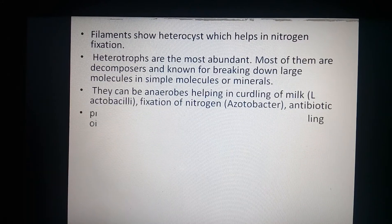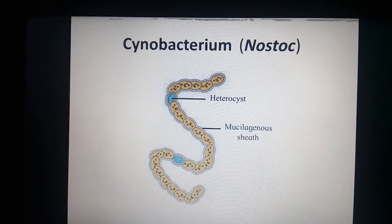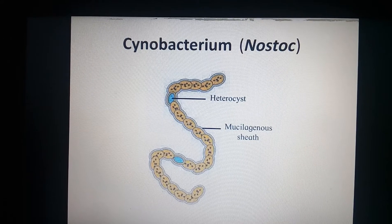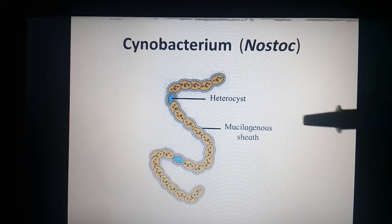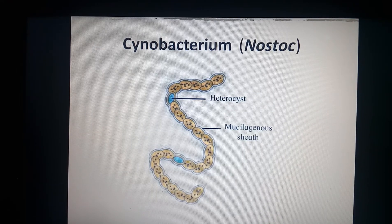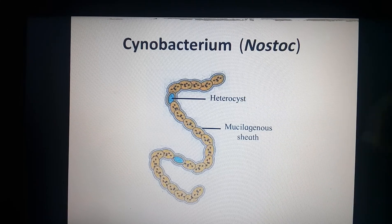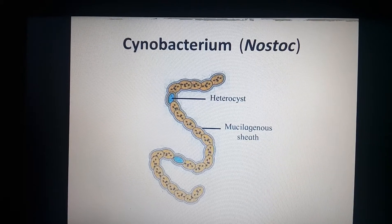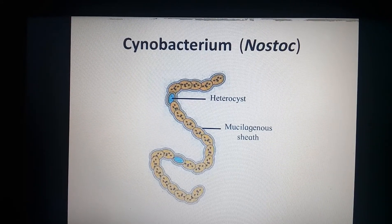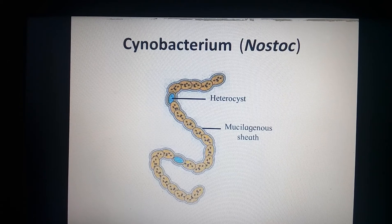Cyanobacteria such as Nostoc and Anabaena are nitrogen-fixing bacteria. The heterocyst is a site of nitrogen fixation in cyanobacteria. Nostoc and Anabaena both show heterocysts, which are the sites of nitrogen fixation in these filamentous cyanobacteria.